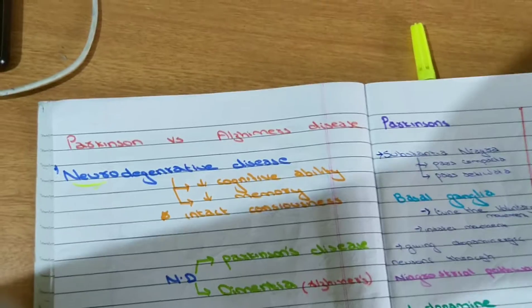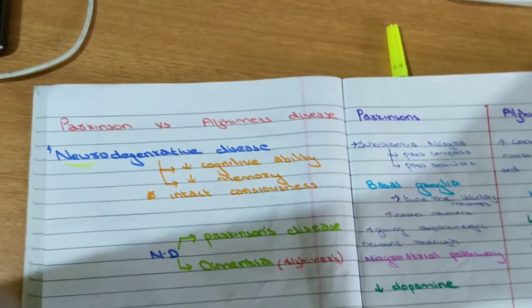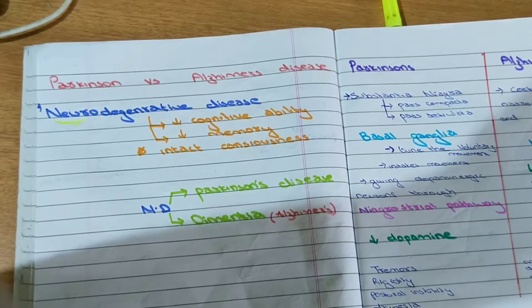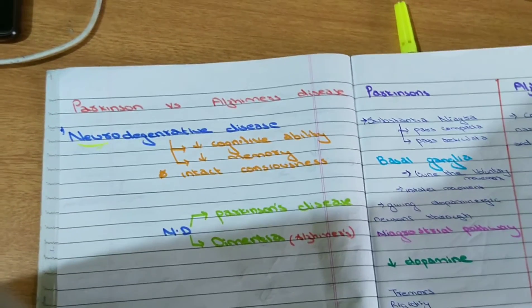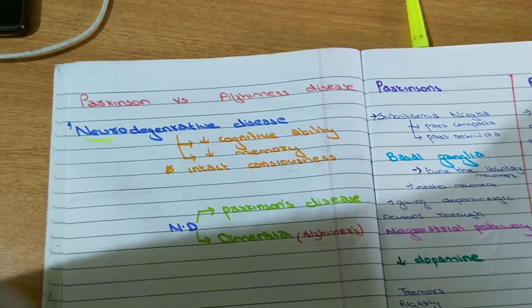There are many types of dementia including frontotemporal dementia, Lewy body dementia, vascular dementia, etc. But the main cause of dementia in elderly is Alzheimer's disease. So we are going to talk about Parkinson's disease and Alzheimer's disease.